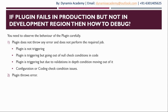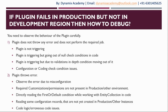If the plugin is throwing an error, these may be the situations where it fails on production. First, observe the error — sometimes the error itself will identify the misconfiguration. For example, if you have not created any required post or pre-images and your code is utilizing those images, then the error message will clearly read that the required entity image is missing.